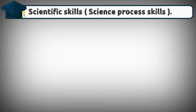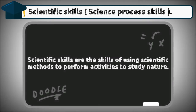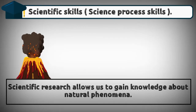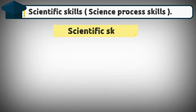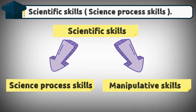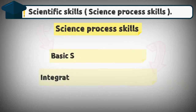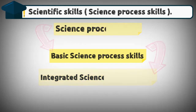Scientific skills, or science process skills, are the skills of using scientific methods to perform activities to study nature. Scientific research allows us to gain knowledge about natural phenomena. Scientific skills consist of science process skills and manipulative skills. Science process skills can be divided into basic science process skills and integrated science process skills.